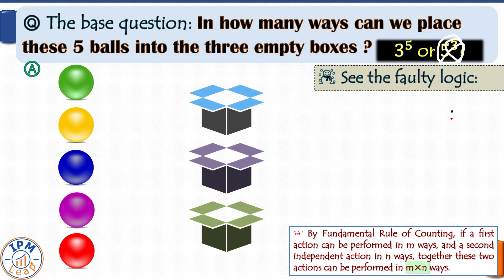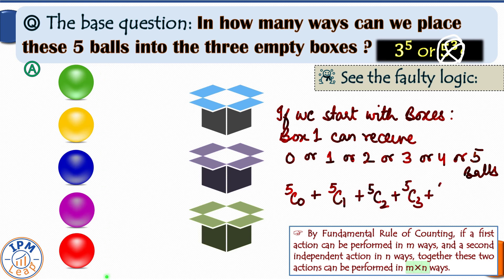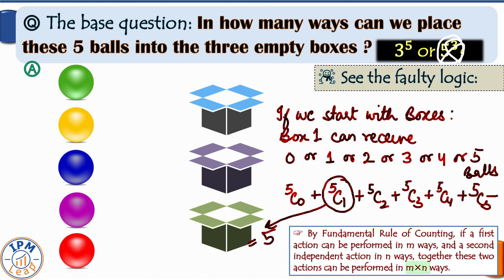If we had started with boxes and tried to see where this thought process goes wrong — when you say box one can receive balls in five ways, that itself is wrong, because if we had to place any one ball into it it would be 5C1, that is five ways; placing any two balls would be 5C2, that is 10 additional ways. There are a total of 2 raised to the power 5 ways in which the first box can receive balls. Furthermore, depending on how many balls we place in box one, the number of ways of placing balls in box two would change. So 5 raised to the power 3 is incorrect.